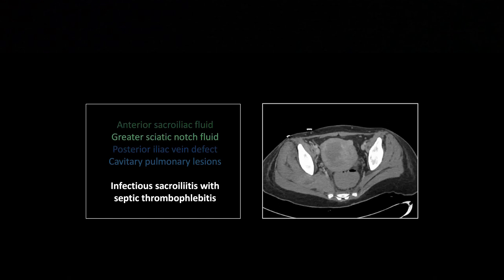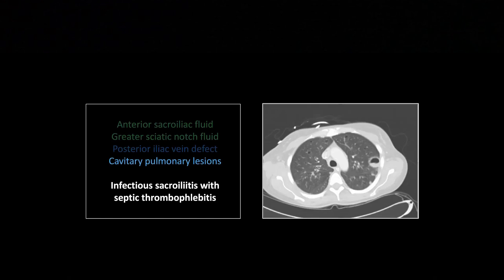So what you have is infectious sacroiliitis with septic thrombophlebitis of the posterior iliac vein. This also extends out the inferior and posterior aspect of the sacroiliac joint into the greater sciatic notch — a fluid collection extending into the external rotators, representing another decompression of the septic sacroiliac joint. And because we have septic thrombophlebitis, we're back to the pulmonary theme.